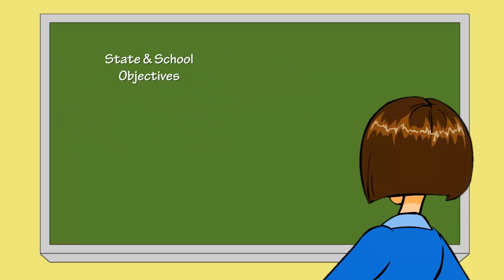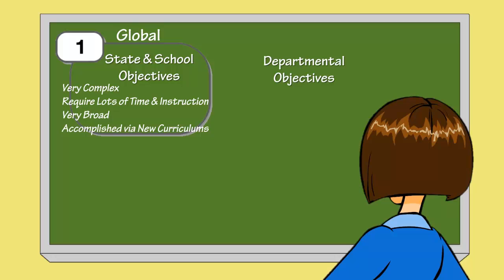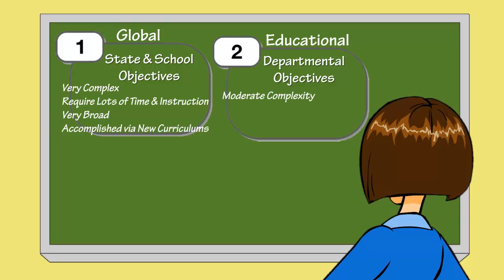If the state and school have mandated standards, we can consider those goals to be somewhat global. Goals like those of the state and school are likely very complex and will require lots of time and instruction to accomplish. These types of goals are very broad and can likely be accomplished through establishing new curriculums. Each department in Ms. Williams' school has also developed new programs. Those types of goals may be considered educational in that they are moderate in complexity and may take weeks or months to complete. They are probably accomplished through the use of units.